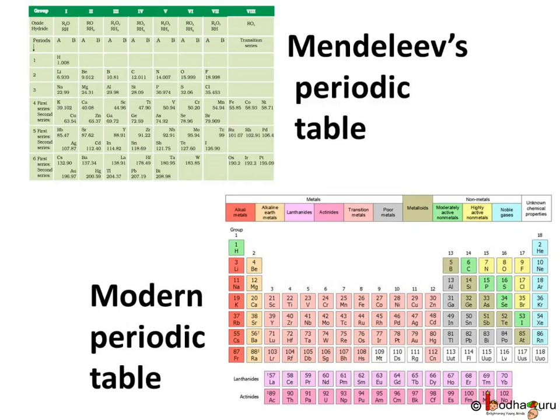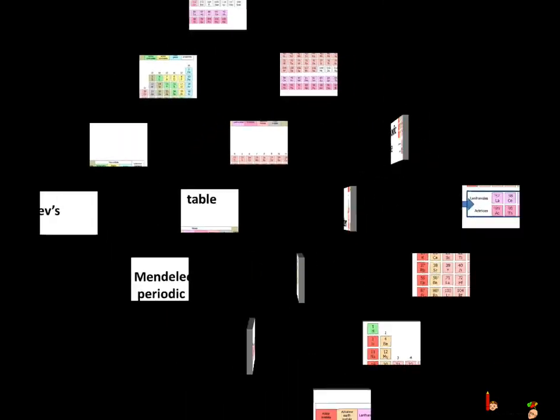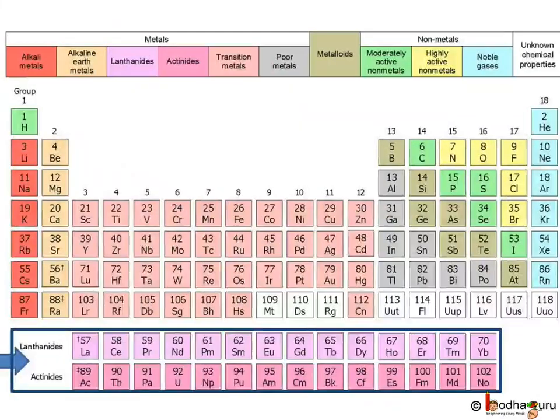In Mendeleev's periodic table, there were gaps for undiscovered elements — remember Eka Boron, Eka Aluminium, and Eka Silicon — whereas the modern periodic table has no such concept and maintains uniformity.